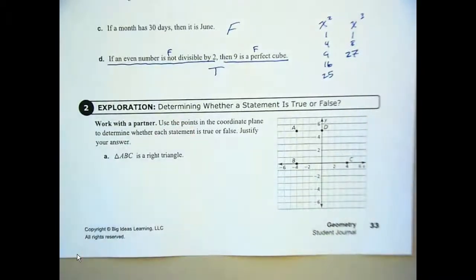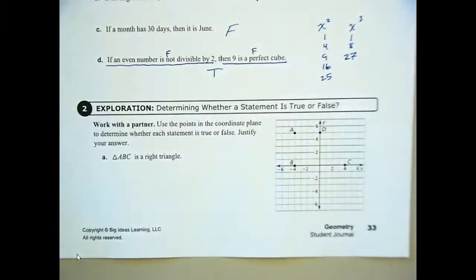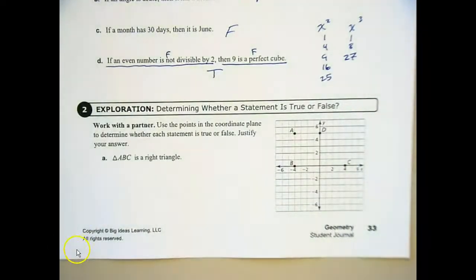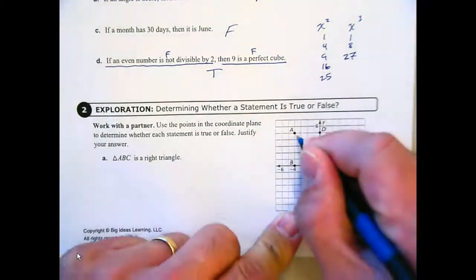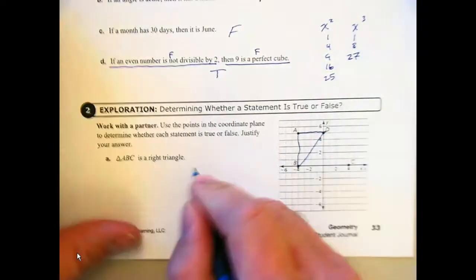Exploration Two — work with your partner. Notice it moves to page 34. Make sure you are justifying; don't just put true or false. Letter A: is triangle ABC a right triangle? True or false? That is true.